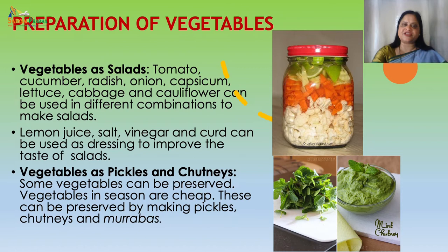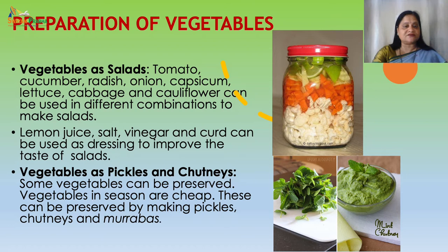Preparation of vegetables — Vegetables as salads: Tomato, cucumber, radish, onion, capsicum, lettuce, cabbage and cauliflower can be used in different combinations to make salads. Lemon juice, salt, vinegar and curd can be used as dressing to improve the taste of salad. Vegetables as pickle and chutneys: Some vegetables can be preserved. Vegetables in season are cheap and can be preserved by making pickles, chutneys, murabba etc.